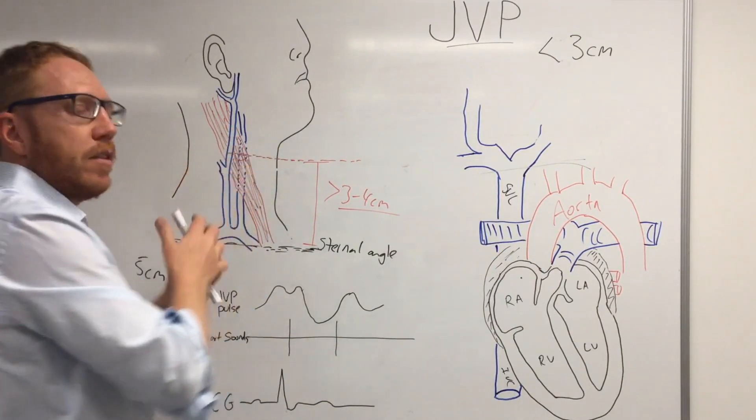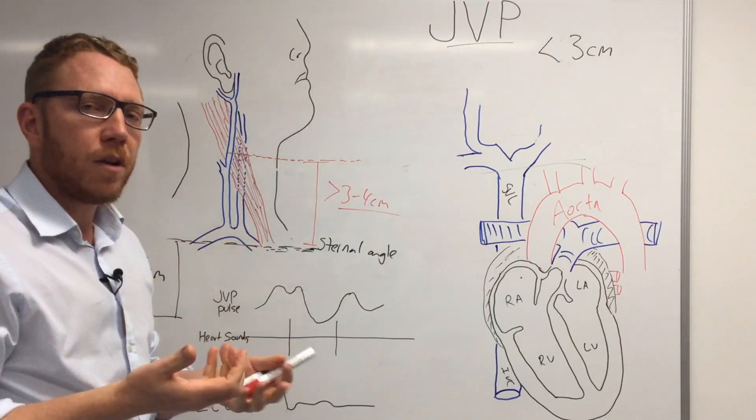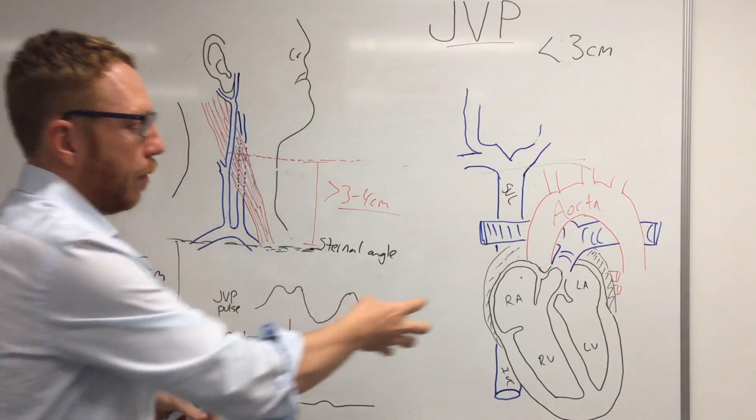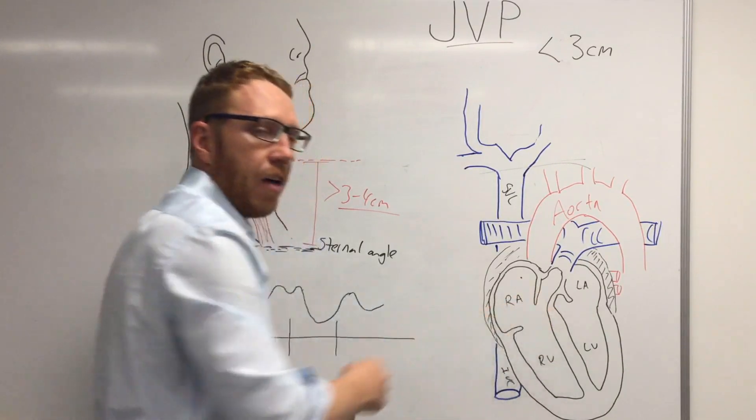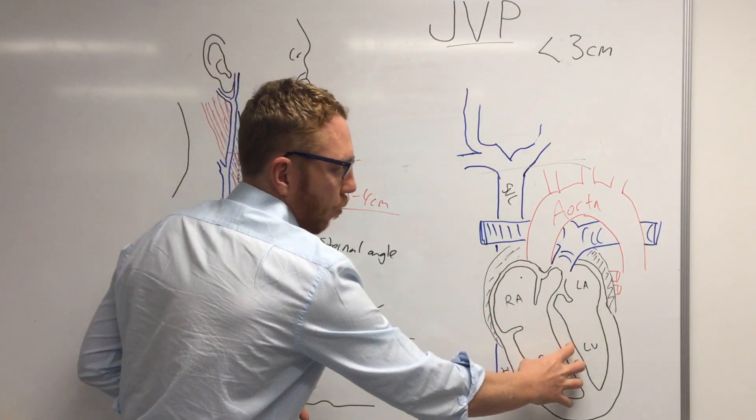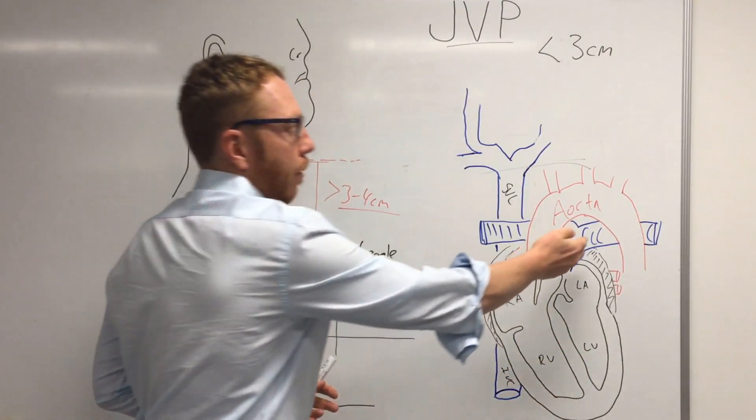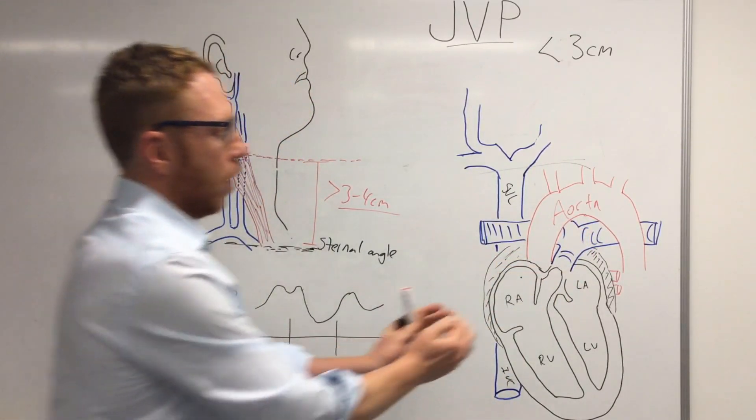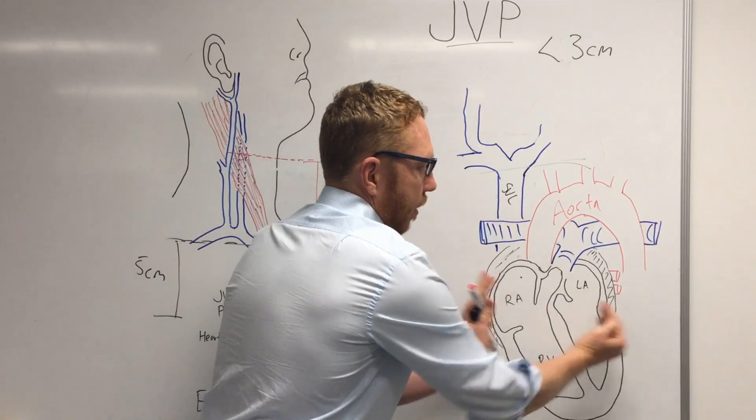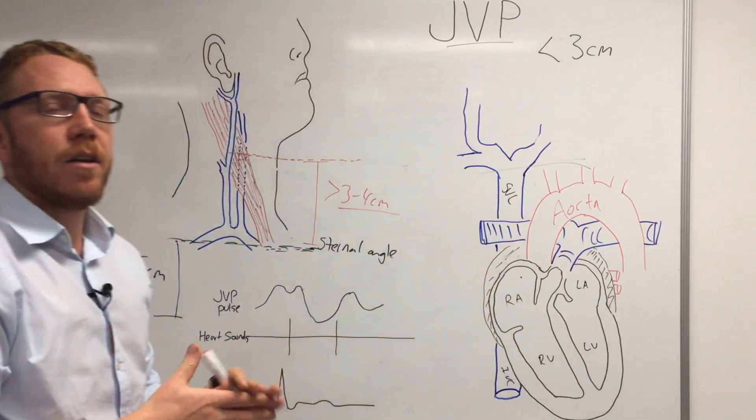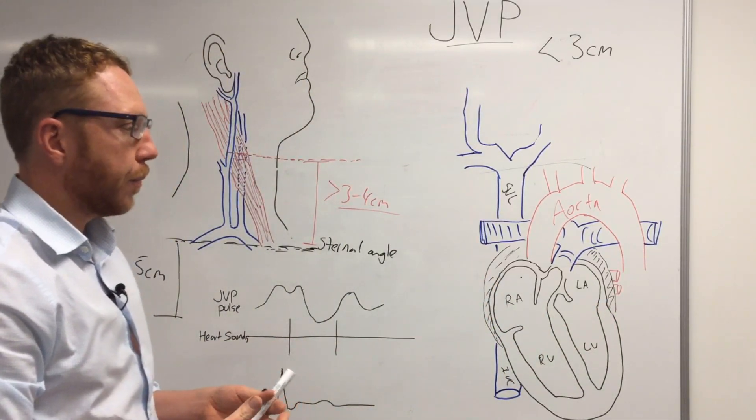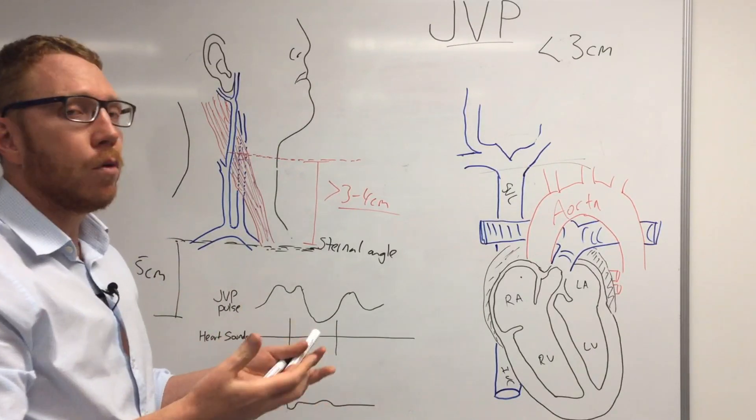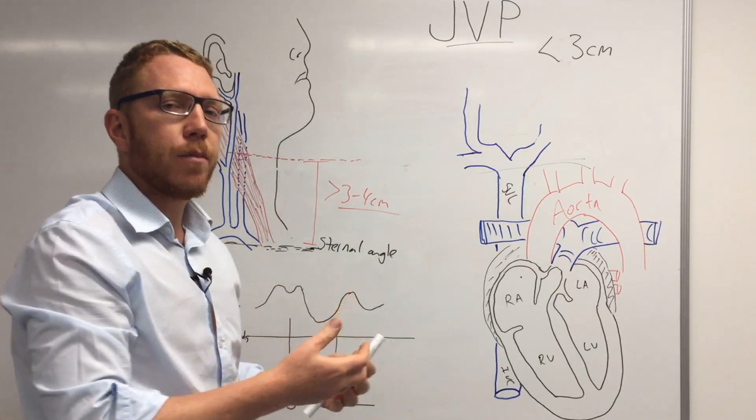Now some reasons for why you'd have extra pressure: you could have an overload of fluid, there could be problems with the valves, there could be a problem with the right ventricle, there could be a problem with the pressure in the pulmonary system, or there could be a problem with the way that the heart is allowed to expand such as with the pericardium. There's probably many more ones but these are some examples of the most common.